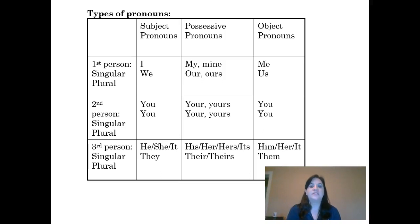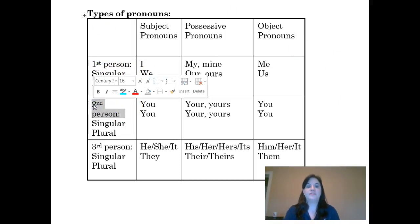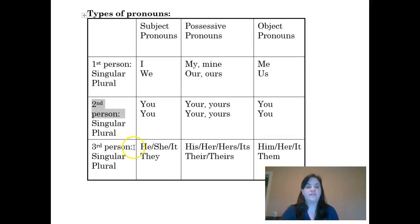I want to explain this chart a little bit. When we speak or write, we have three different persons from which we can speak. We have first person, which means you are talking about yourself. We have second person, which means you are talking directly to someone else. And then we have third person, which means you are talking about someone else.